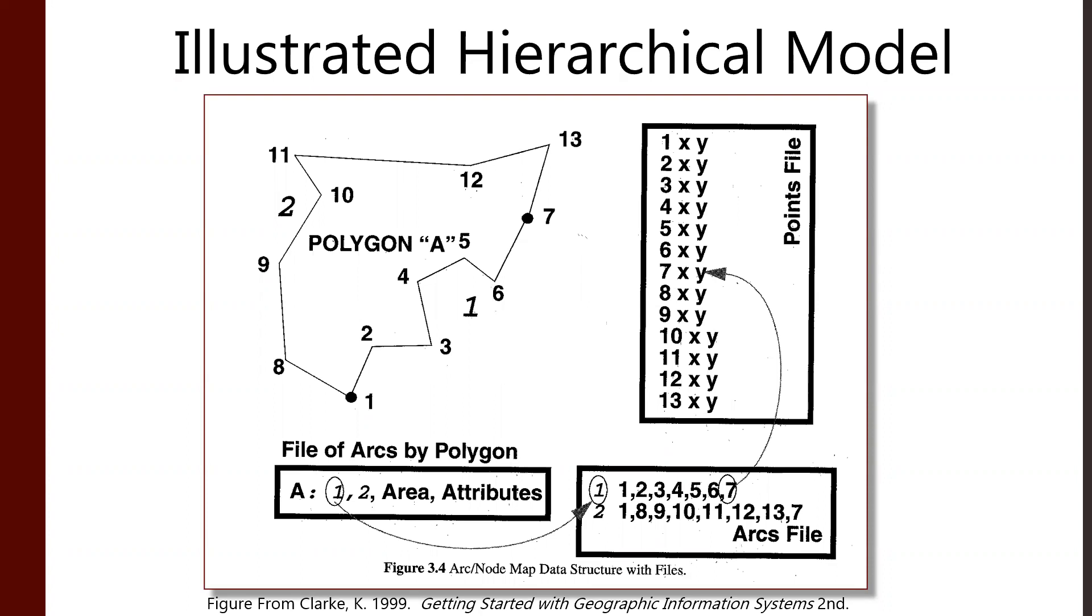In this case, we can see we have all of our points in our points file, 1 to 13. You can see them all on the map there. Arc 1, or line 1, runs between points 1, 2, 3, 4, 5, 6, and 7.